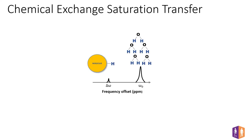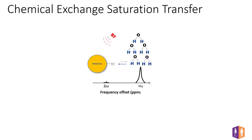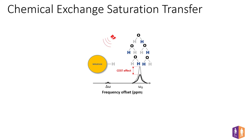Chemical Exchange Saturation Transfer, or CEST, is a molecular imaging technique which provides access to a whole spectrum of unique biomarkers. Its imaging principles involve chemical species or molecules which contain a hydrogen proton that can be exchanged with those of water. By applying a radiofrequency RF pulse at the resonance frequency, the chemical species of interest reach a saturation state, and their labelled excited protons are exchanged with the non-excited protons of the water. As a consequence, the water signal slightly decreases. If this process is continually repeated through a few seconds of RF irradiation, this leads to a buildup of saturation in water, and the decrease of the water signal becomes visible. This is known as the CEST effect.